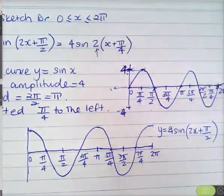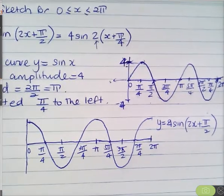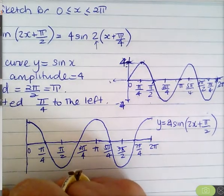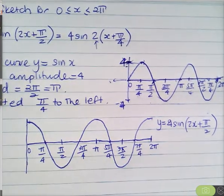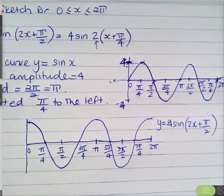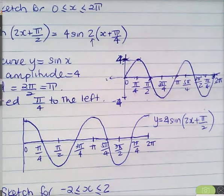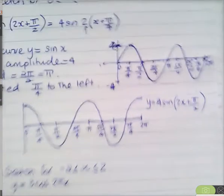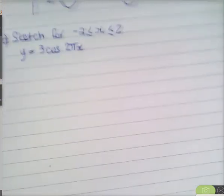Okay, that's question 5f. I'm now going to look at question 6b — I'll just put it up on the screen. Question 6b says sketch for the domain negative 2 through to 2.